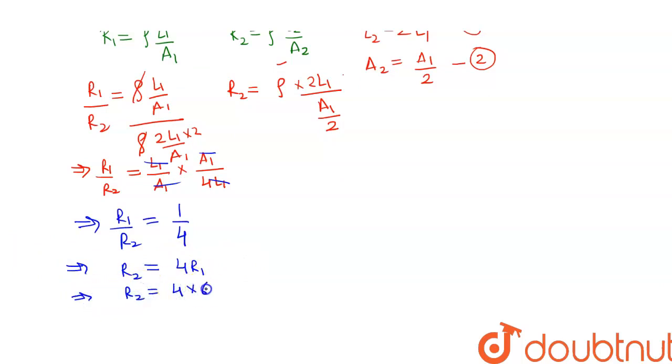So the resistance of wire after stretching it to twice of its length will be equal to 24 ohms. Thank you.